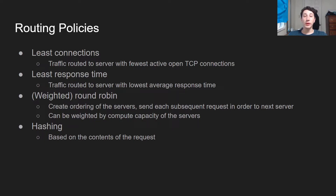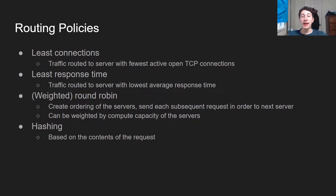There's a variation called weighted round robin, which takes into consideration the actual computing capacity of each server. So if one server is doubly more computationally powerful than another, it'll probably see two requests while the half-as-powerful server sees one in a given round robin iteration. And then there's hashing, which is what we've discussed quite a bit in the past with partitioning — that's basically where you take the contents of the request and send it to a given application server.